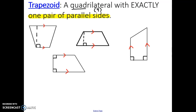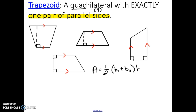You can see in the four trapezoids pictured below that each pair of parallel sides is indicated by the red arrows drawn in. The formula for the area of a trapezoid is A equals one-half times the sum of its two bases, base one and base two, times its height.